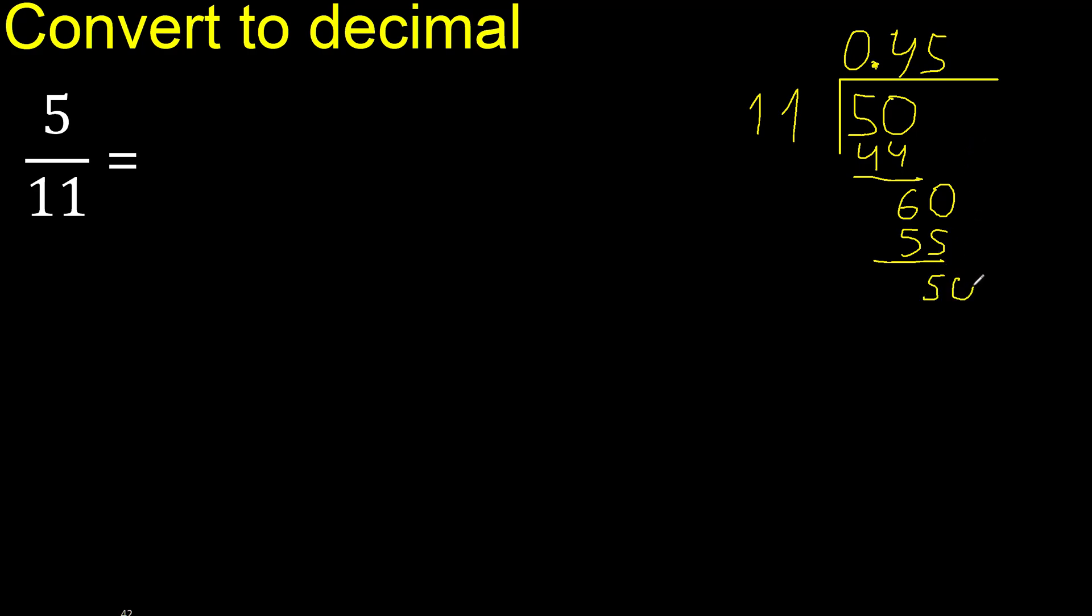Always complete with 0, 50. Multiply, 11 multiplied by 4, 44. Subtract. Complete, 60. Multiply, 11 multiplied by 5. Subtract. Complete, 50.